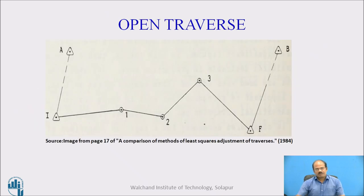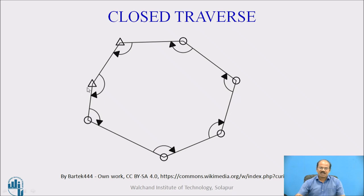Let us start and understand what is meant by a traverse. A traverse is a skeleton or a network of surveying lines which are connected with each other. If this skeleton or network begins from one station and ends at some other station, the traverse is known as an open traverse. However, if it begins at one station and tries to end up at the same station, we call it a closed traverse.